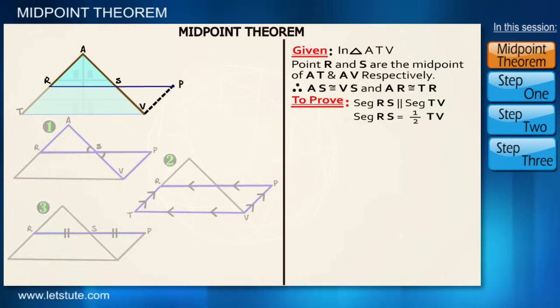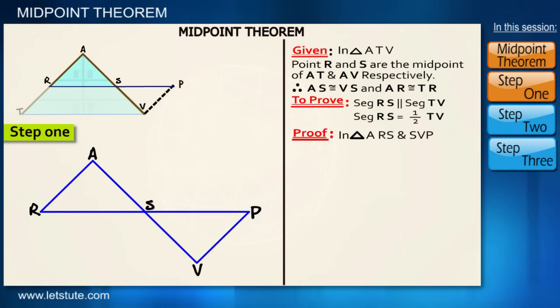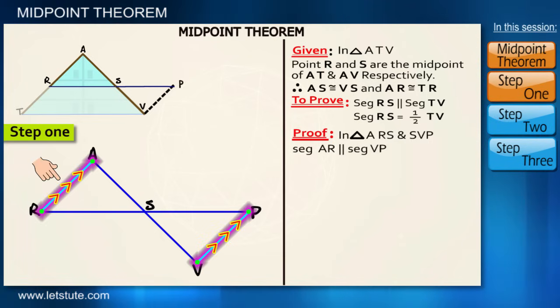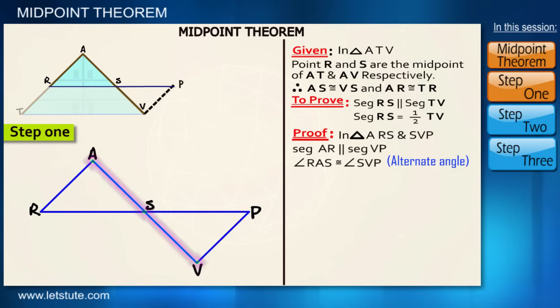So without wasting any time, let's move to step number one. First of all, we'll take both the triangles for comparison. So AR is parallel to VP for being alternate angle.